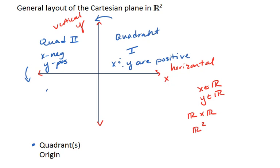So in quadrant three, both x and y are negative. And finally, in quadrant four, x is positive, and y is negative.